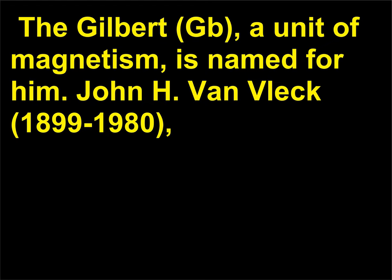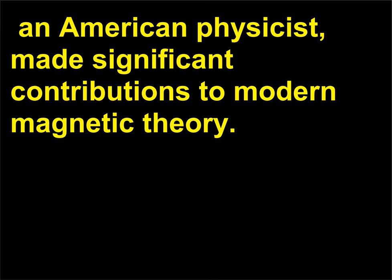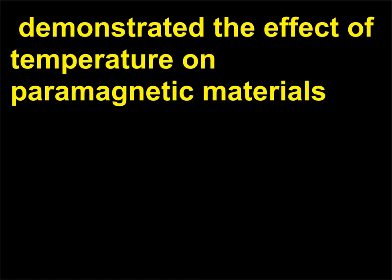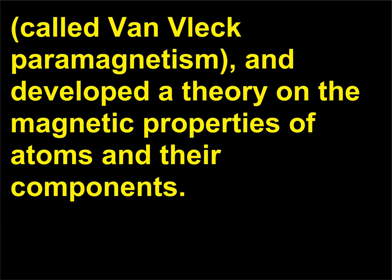John H. Van Vleck (1899–1980), an American physicist, made significant contributions to modern magnetic theory. He explained the magnetic, electrical, and optical properties of many elements and compounds with the ligand field theory, demonstrated the effect of temperature on paramagnetic materials — called Van Vleck paramagnetism — and developed a theory on the magnetic properties of atoms and their components.